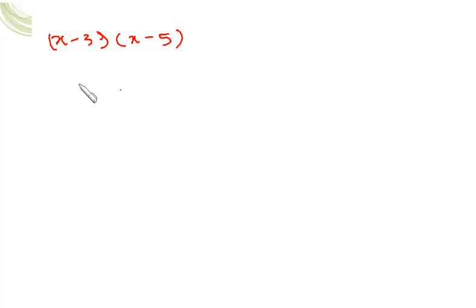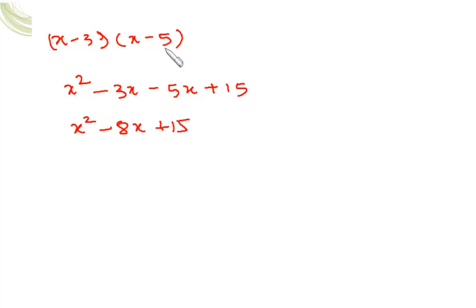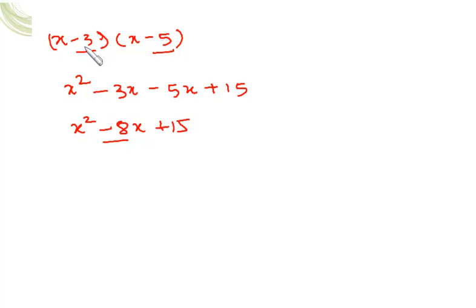One more example: (x-3)(x-5). Multiplying gives x²-3x-5x+15 = x²-8x+15. The sum of -5 and -3 is -8, which is the coefficient of x, and the product of -3 and -5 is +15, the constant term. If both signs are negative, retain the signs; if one is negative and one positive, retain the sign of the bigger number.